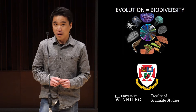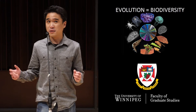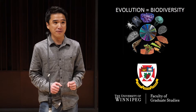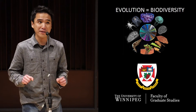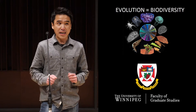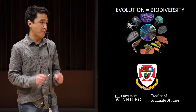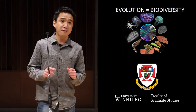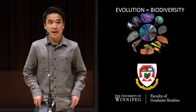Well, where did the different species come from? How did we get them? Darwin called this the mystery of mysteries, and to explain this, he proposed a very good theory: the theory of evolution through natural selection.